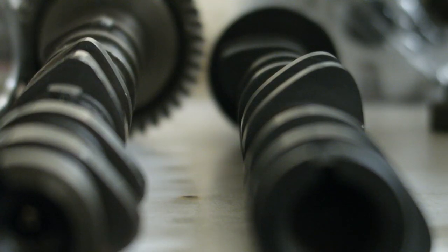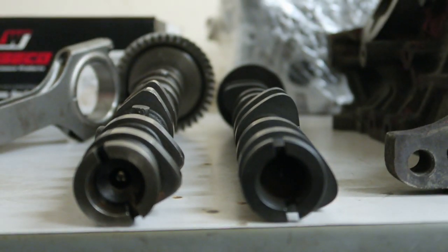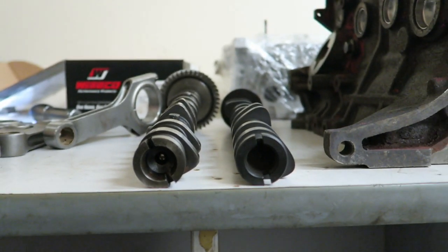Here you can see the factory cams compared to the aftermarket big cams that we're going to put into this build. Now these are a 282 duration cam. There's a couple mil extra lift there which is going to be good.